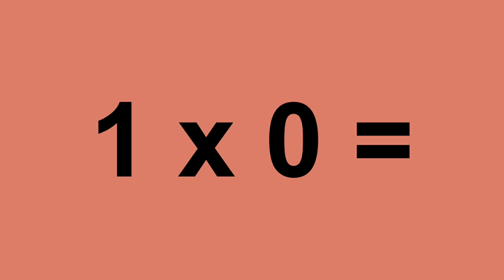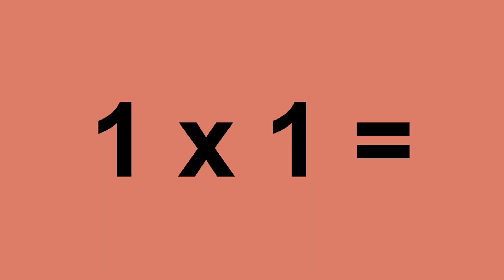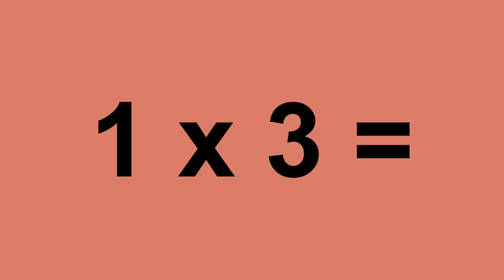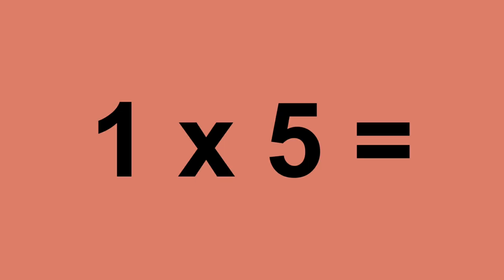One times zero equals zero. One times one equals one. One times two equals two. One times three equals three. One times four equals four.